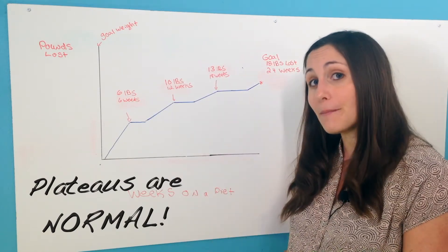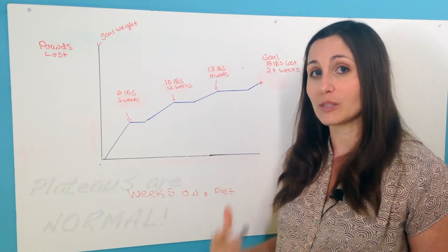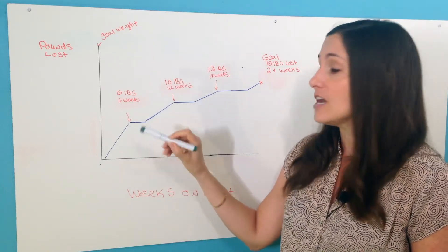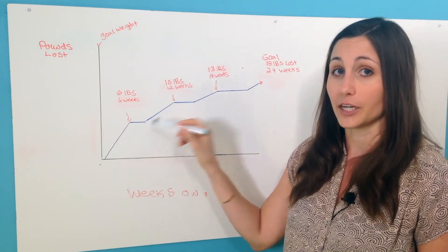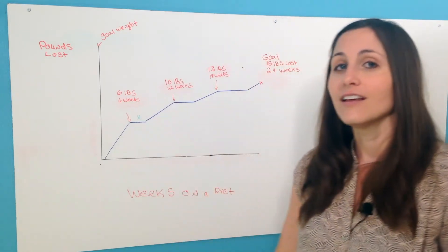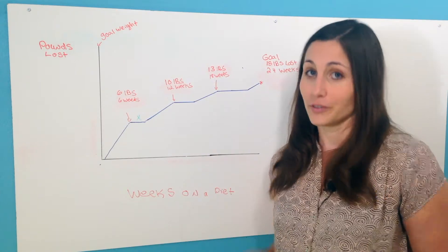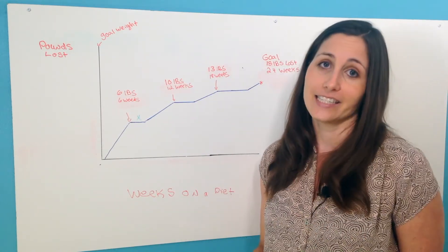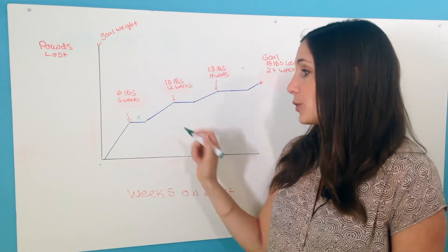Continue doing all the smart, awesome lifestyle behaviors that you were doing that lost the six pounds. You might need to make some adjustments here. But what I find is that most people - that's when they give up on their diet. They think it doesn't work, it wasn't the right diet, and they go back to their old behaviors.